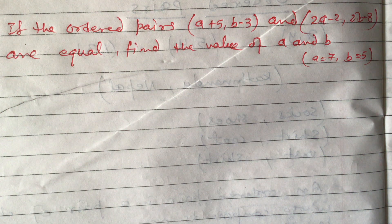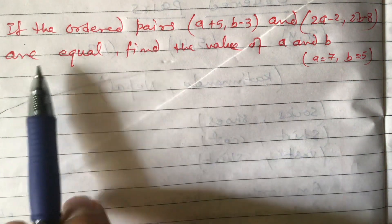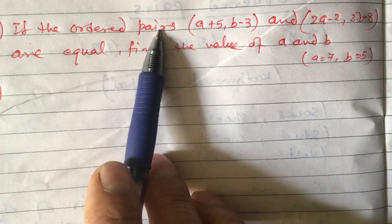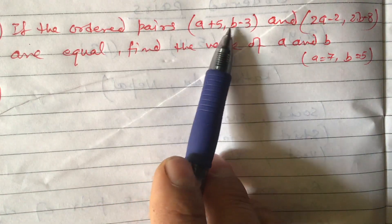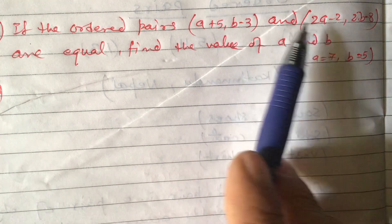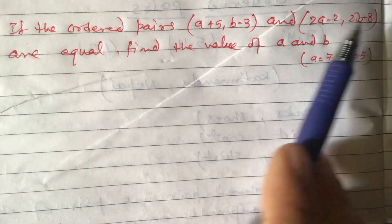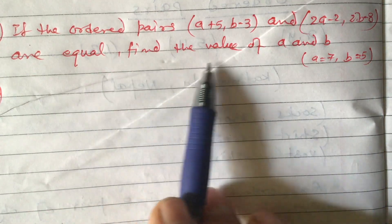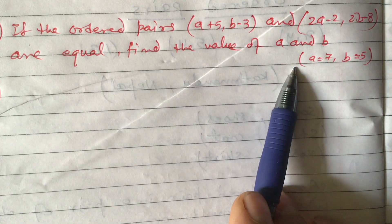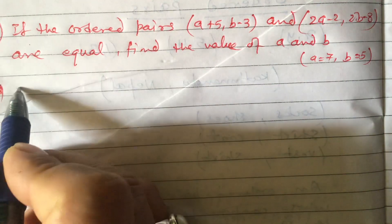Dear students, today I'm going to teach you a problem related to ordered pairs. Here is the question: if the ordered pairs (a+5, b-3) and (2a-2, 2b-8) are equal, find the value of a and b. We are given that these two ordered pairs are equal.